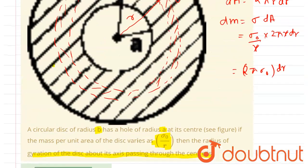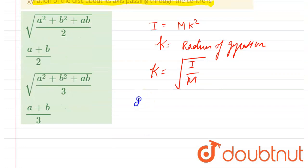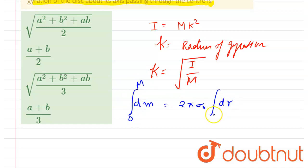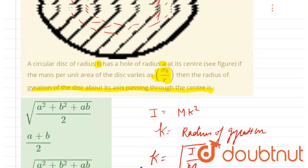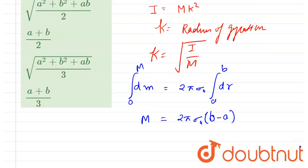So we have dm = 2π·sigma₀·dr. To find the total mass, we integrate from r = a to r = b. After integration, this gives us the total mass M = 2π·sigma₀·(b − a).